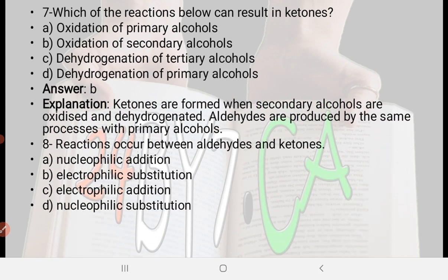Next: Which of the following reactions can result in ketones? Option A: oxidation of primary alcohol, option B: oxidation of secondary alcohol, option C: dehydrogenation of tertiary alcohol, option D: dehydrogenation of primary alcohol. The right answer is option B, oxidation of secondary alcohol. Ketones are formed when secondary alcohols are oxidized and dehydrogenated. Aldehydes are produced by the same processes with primary alcohols.